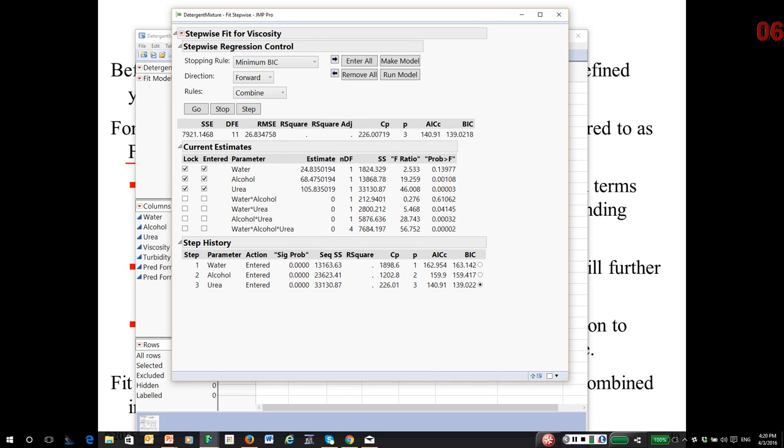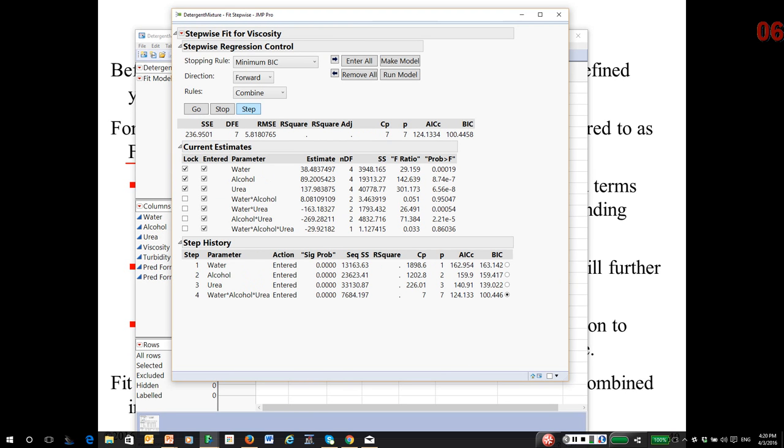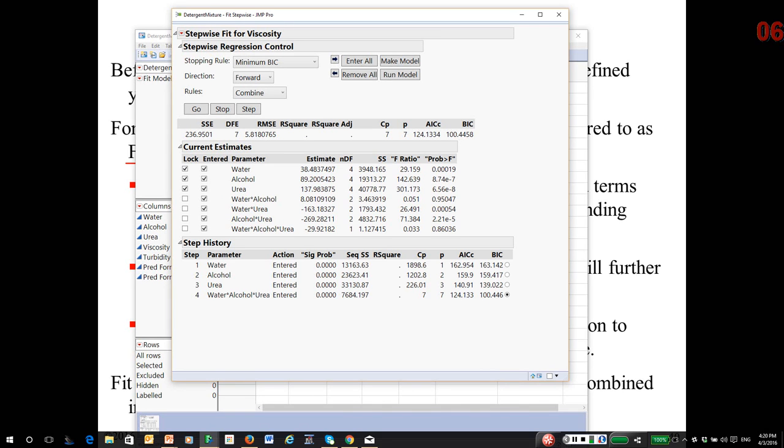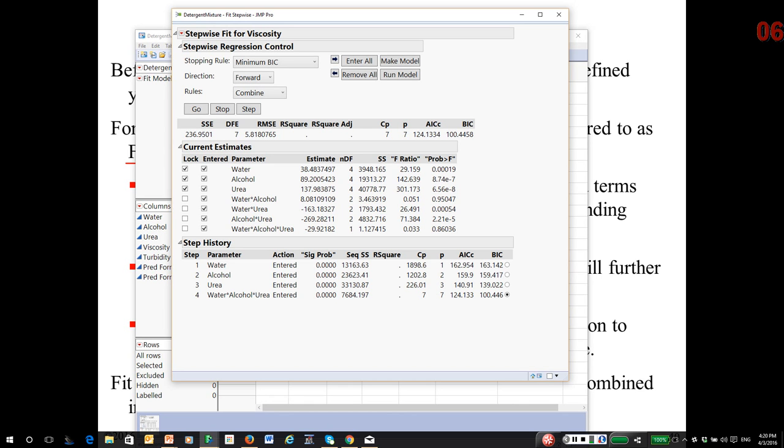You cannot remove them, or you wouldn't have a mixture. So at this point, if I click Step, what JMP did, by the way, it found that the three-way nonlinear blending term was highly significant. And then it automatically, using the heredity principle, filled in all the two-ways. So minimum AIC leads us to this model. So at this point, you can now fit this model. Just click on Run Model.